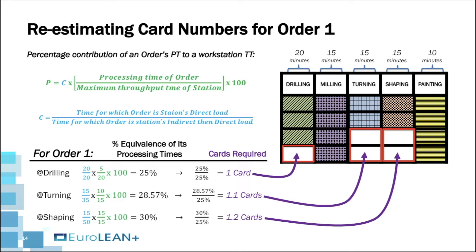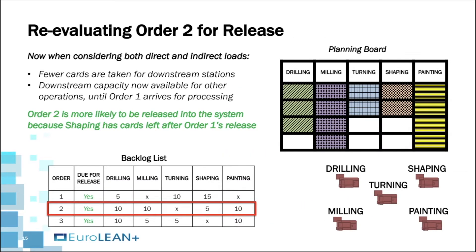Instead of 3 and 4 cards for turning and shaping respectively, we would attach 2 cards each for both stations. This means that after releasing Order 1, we would have 2 cards left for shaping, which can then be used to release Order 2. In other words, the downstream capacities are available for other operations until Order 1 arrives for processing.